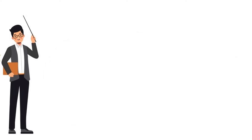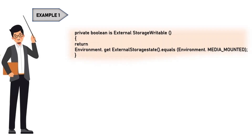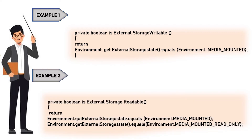Example 1: this first example checks the volume containing the external storage for reading and writing. Example 2: this example checks the volume for reading only.